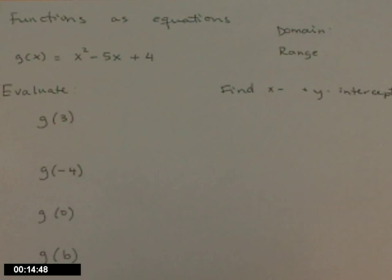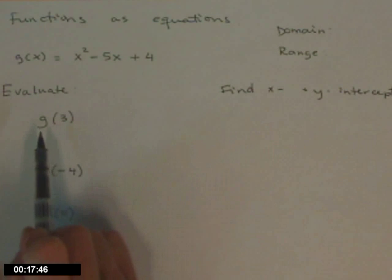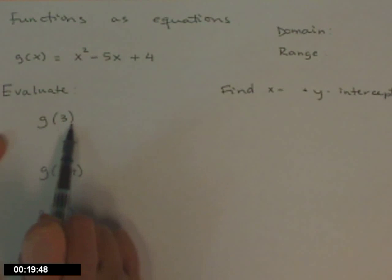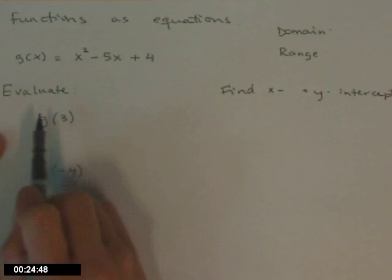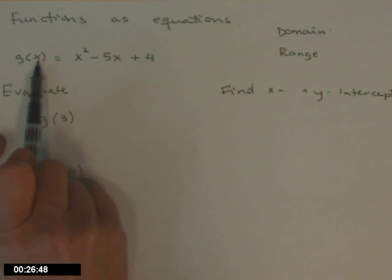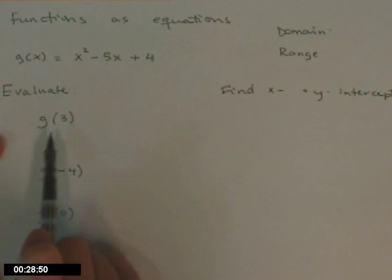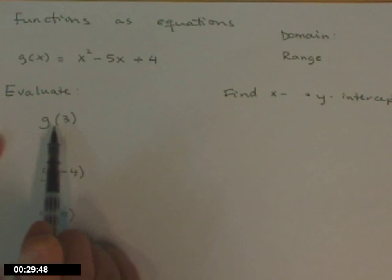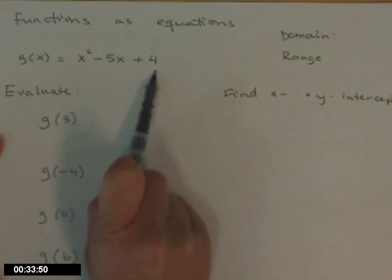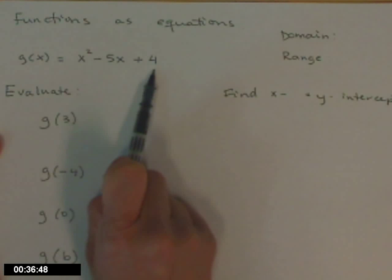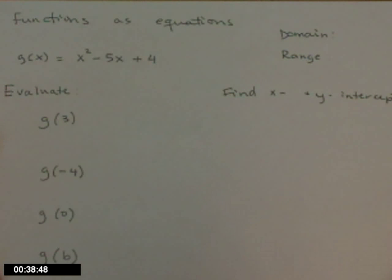One of the most common things you'll be asked to do is evaluate this function. The way that looks is g followed by a number in parentheses, or sometimes a letter as we'll see. What that means is, if you notice up here I have g of x — this is g of 3. So what I need to do is, on the right side in this equation, I need to replace every x with 3 and do the calculation.